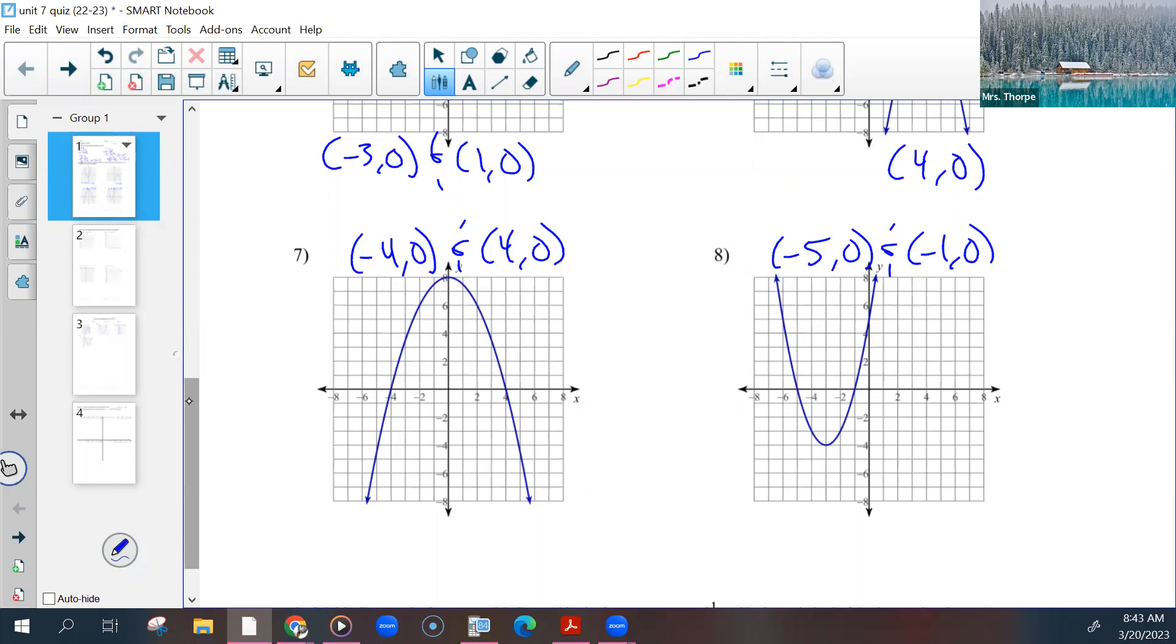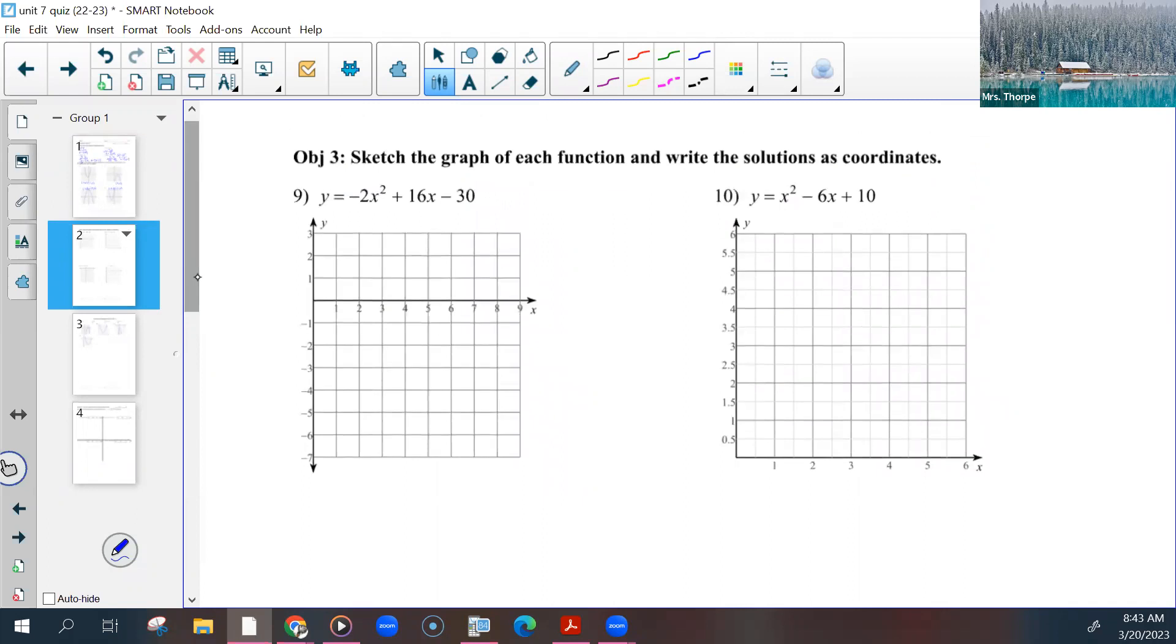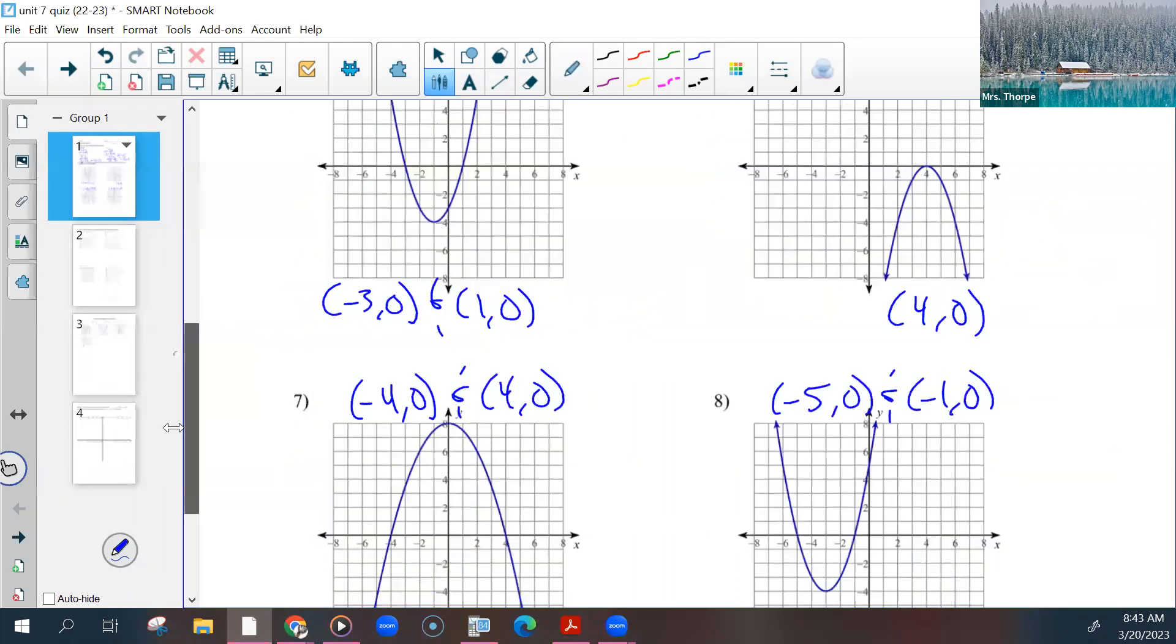As long as you can recognize what the solutions are, be able to recognize the correct order, it should be fine. It has to be number first then zero. It can't be zero then the number. Then objective three.